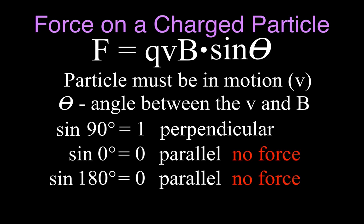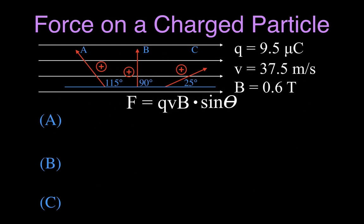So there are two cases where the particle won't feel any force: the particle is not moving, or the particle is moving parallel to the magnetic field. If it's moving perpendicular it feels the full force, and if it's somewhere between zero and 90 degrees the force will be reduced. Now let's do an example. We have a charged particle with a charge of 9.5 microcoulombs, and we have three different examples. The charge, velocity, and magnetic field strength are the same in each case — the only thing that's different is the angle: case B is 90 degrees, case A is 115 degrees, and case C is 25 degrees.